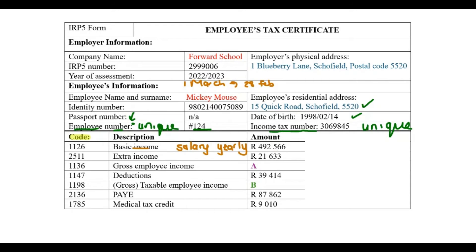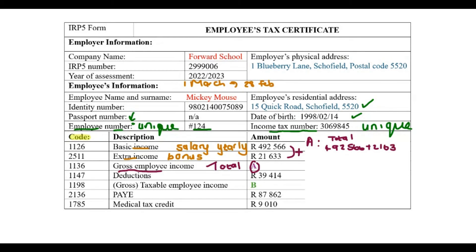Next we see extra income — things like his bonus or overtime — which added up to 21,633. Finally, we see the gross employee income, which is the total income before any deductions, and the value is marked A. To determine the gross employee income, I add the basic income plus the extra income: 492,566 plus 21,633 equals 514,199. That's the yearly amount before any deductions.